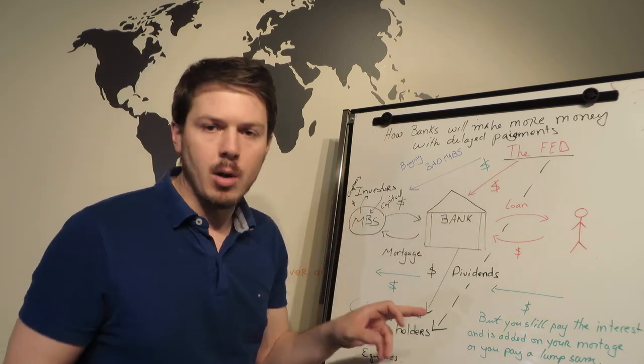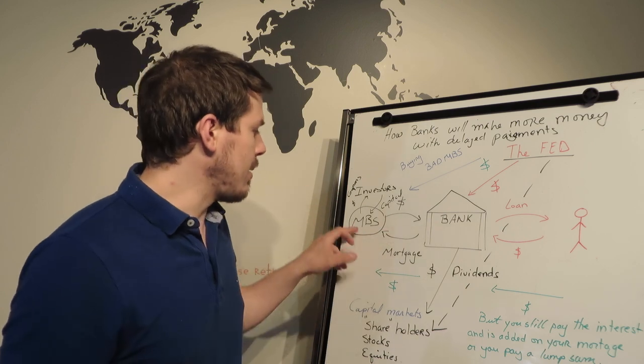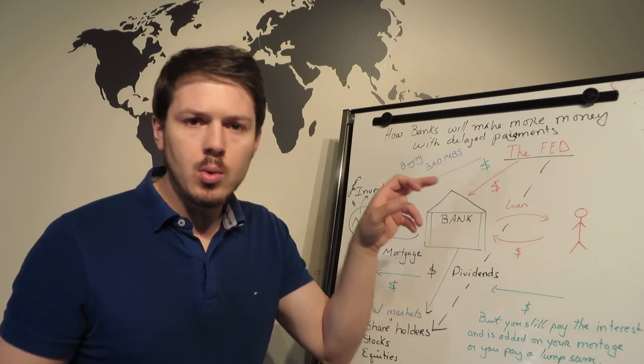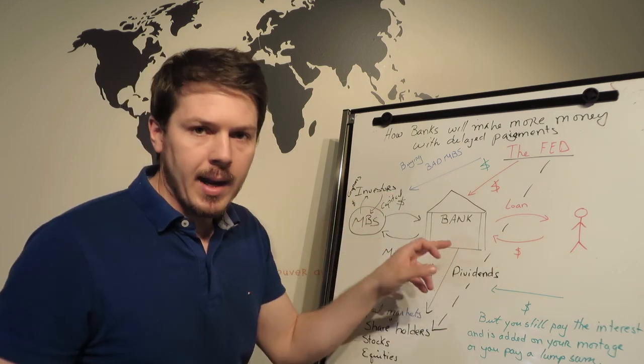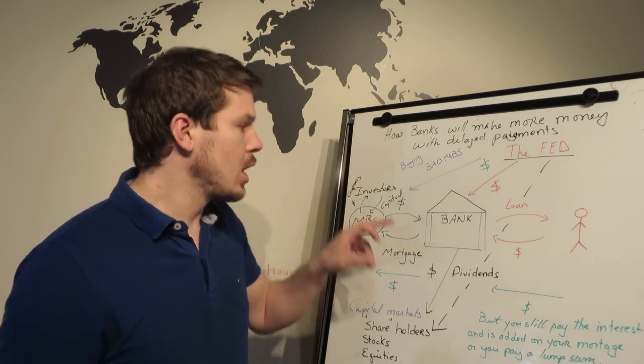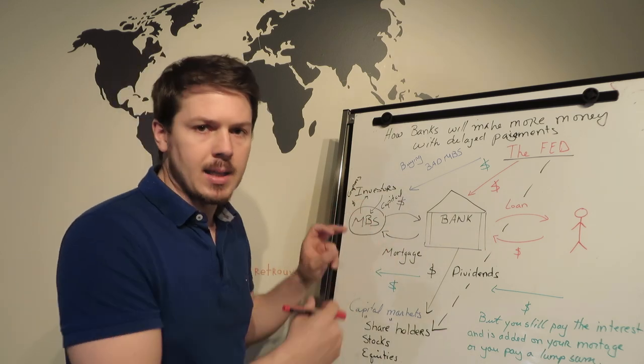What happens is that when you take a mortgage with the bank, automatically the banks sell that mortgage to an investor and it goes into an MBS—it goes into a mortgage-backed security.